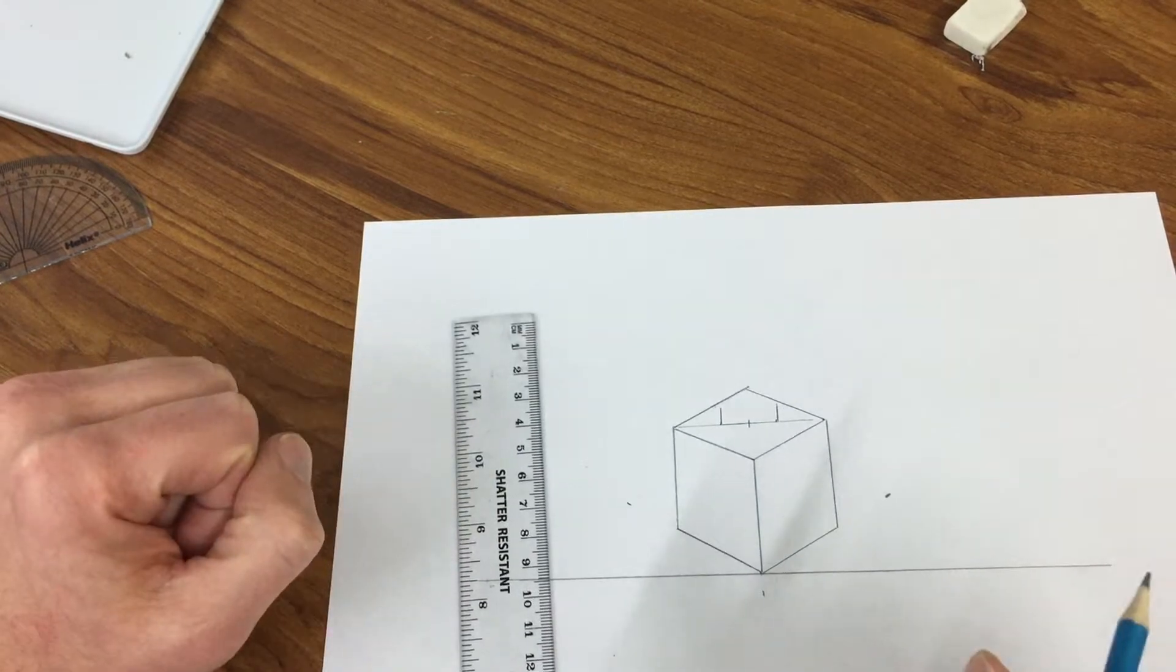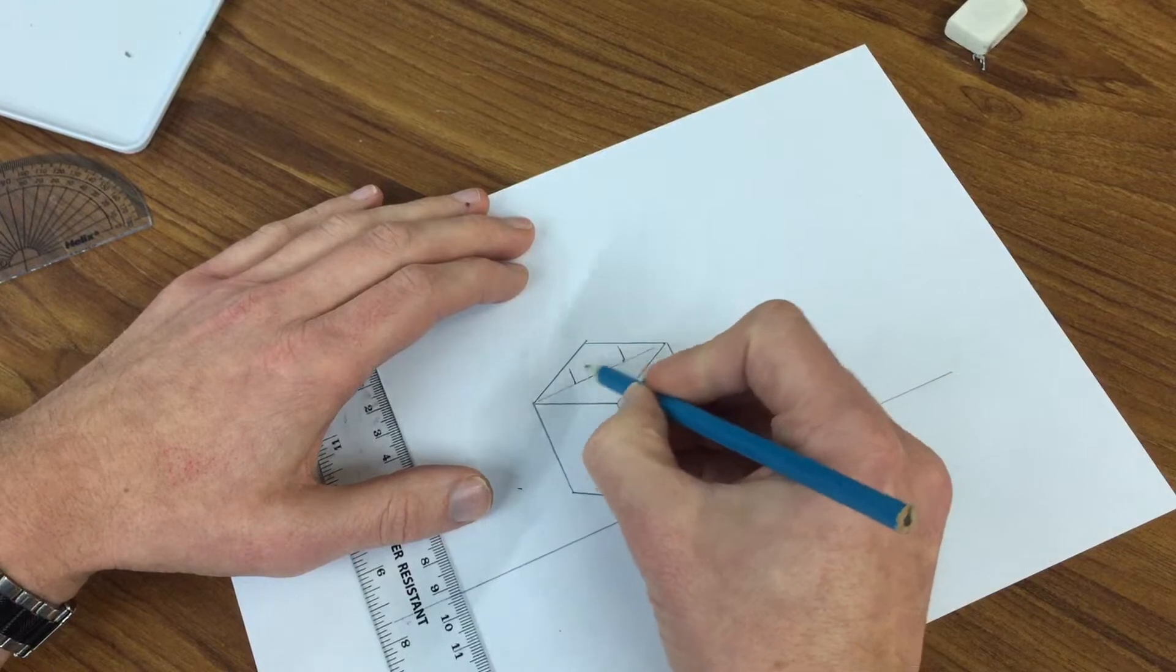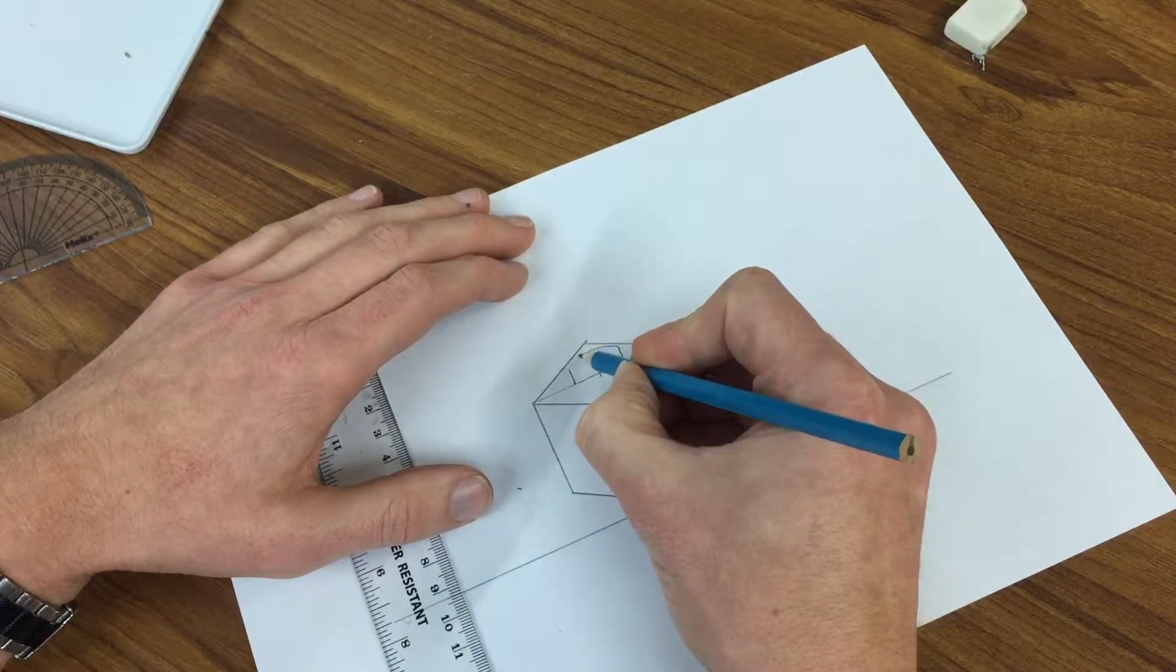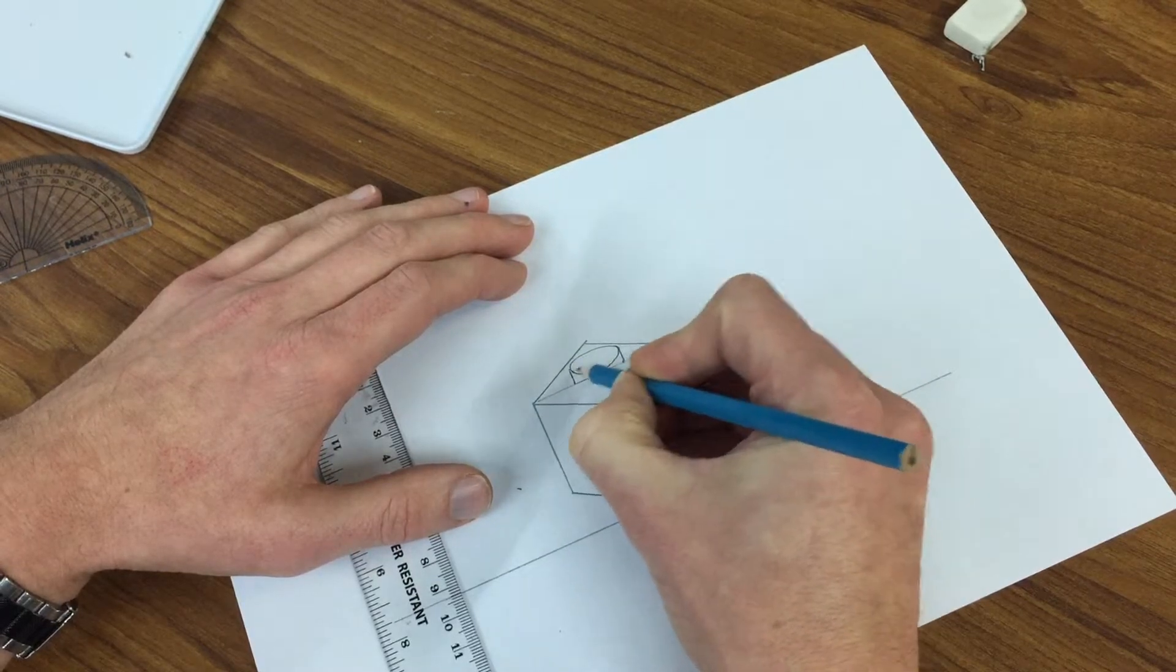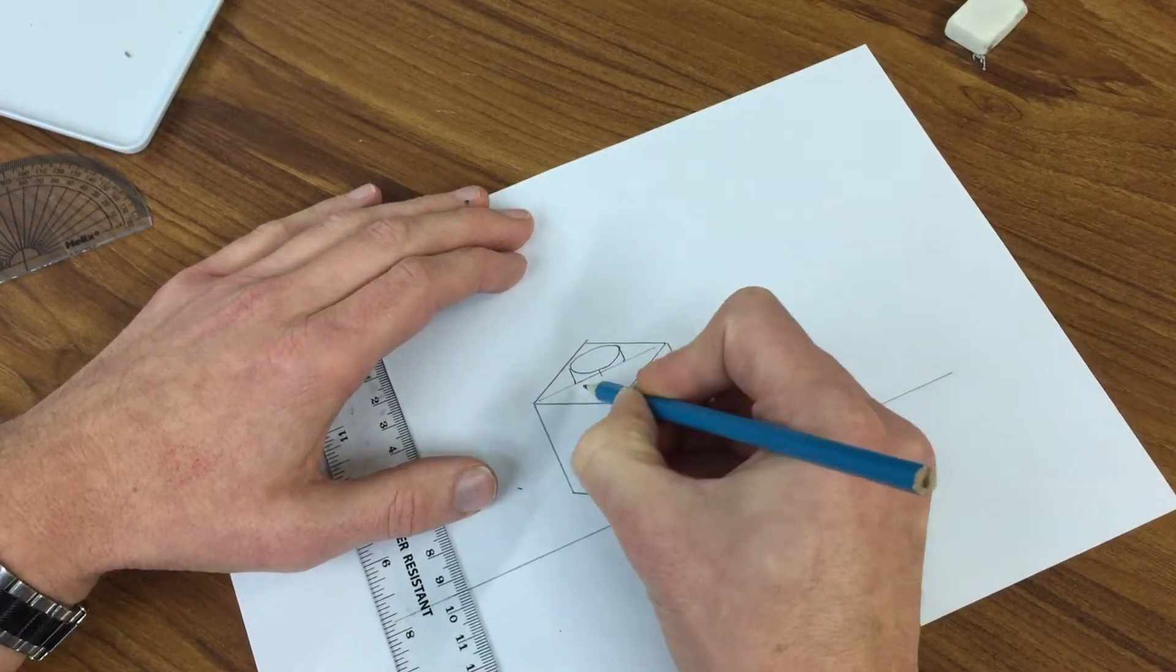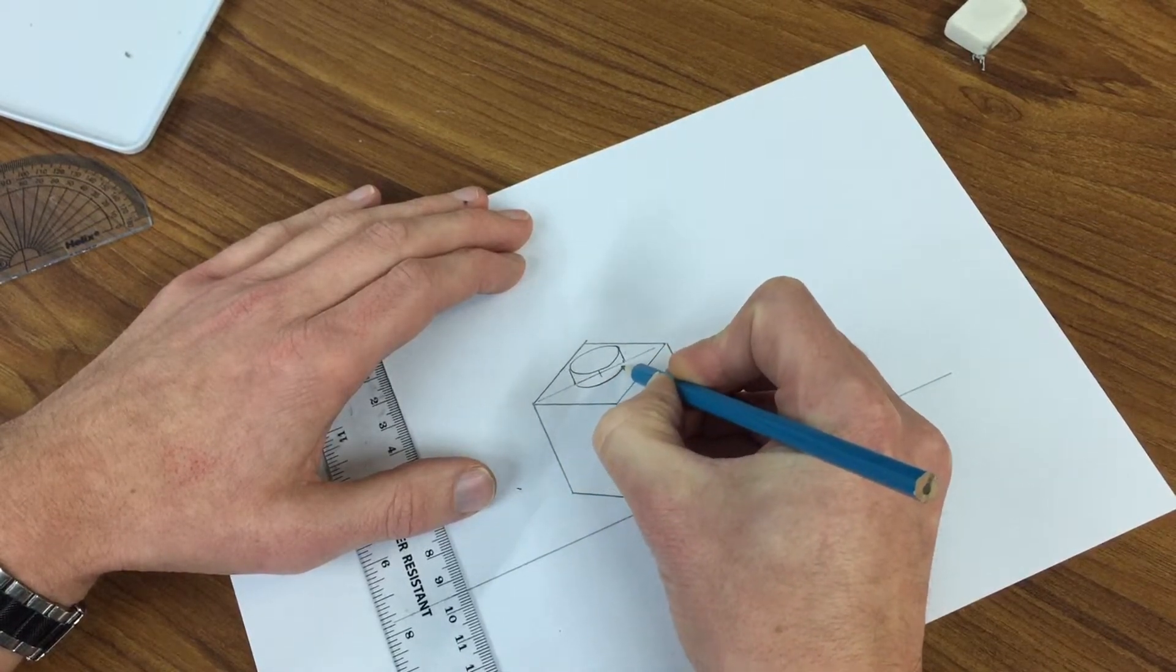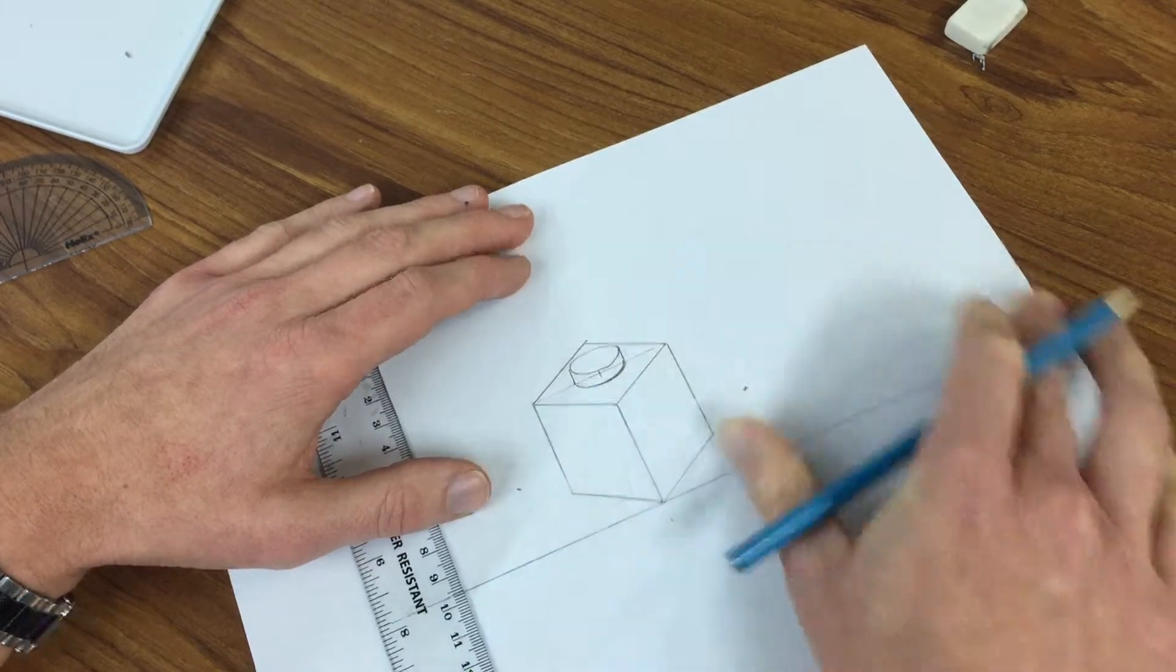And then once you've got that you're gonna need to draw the round part. Now as I said it's gonna appear oval shaped. So roughly I'm just gonna do mine freehand. You can do an oval that connects both of those lines. Then at the bottom it's gonna follow that curve shape again. It's gonna look something like that.